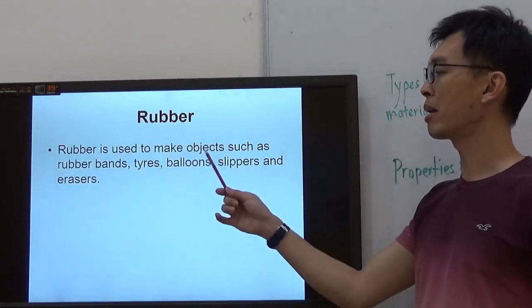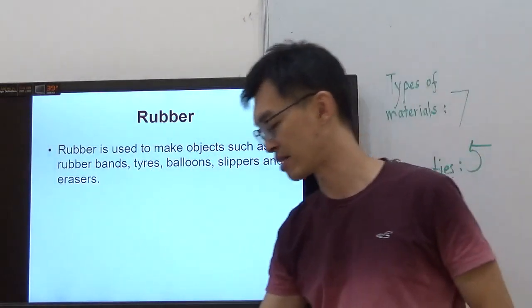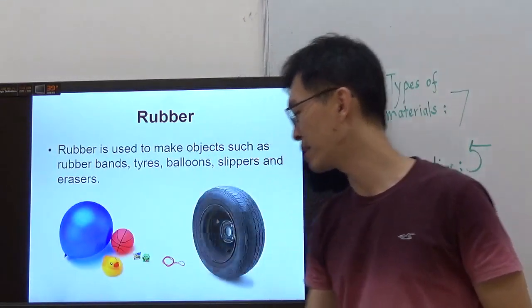And that is being used to make your car tires, your rubber band, your eraser. Rubber is used to make objects such as rubber bands, tires, balloons, slippers, and erasers. I'll just show you a few examples.